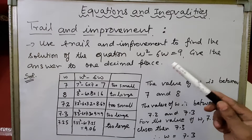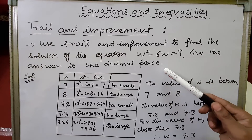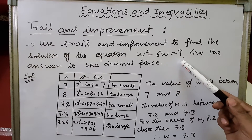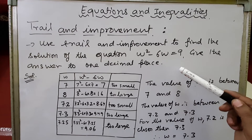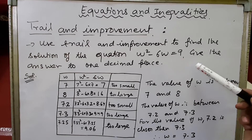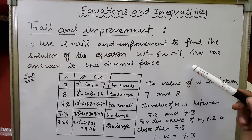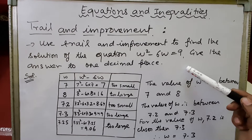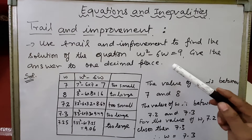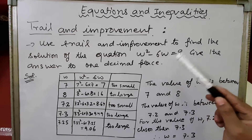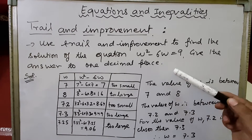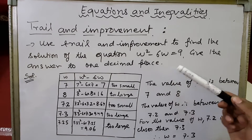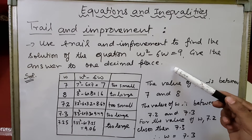That is trial and improvement — it will improve the result and move closer to the solution, so that after every trial we get the answer more correctly and more closer to the solution. We assume the value, substitute it, then improve the assumed value and try to move closer to the answer.